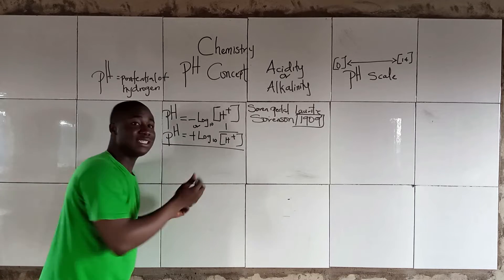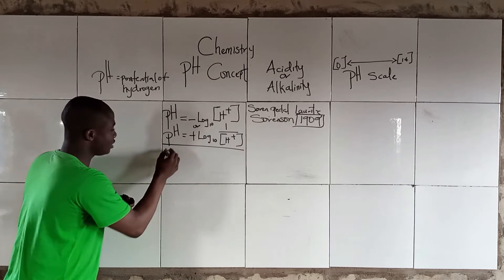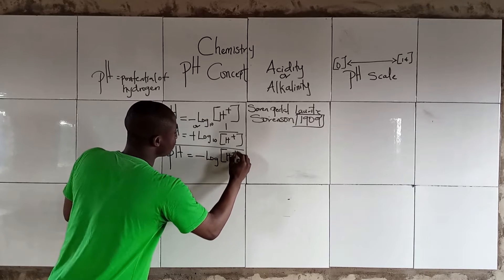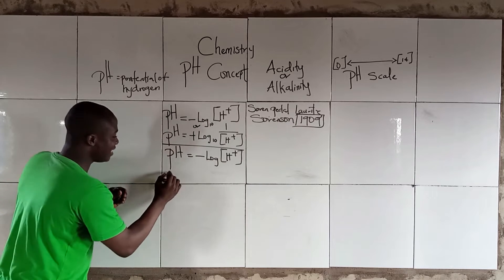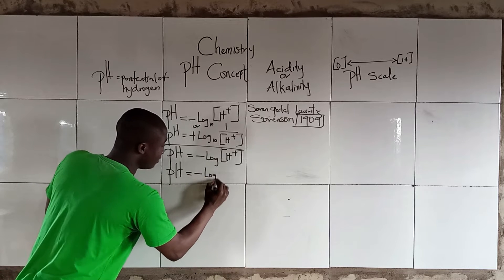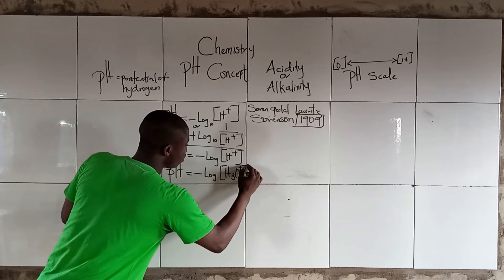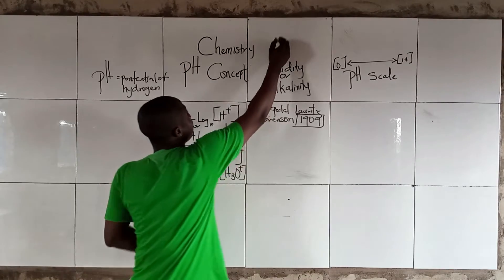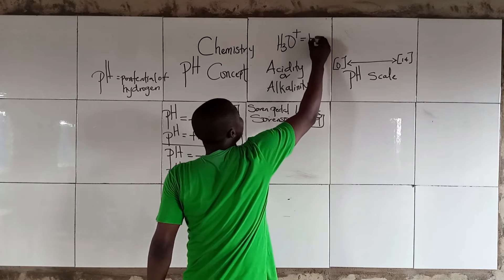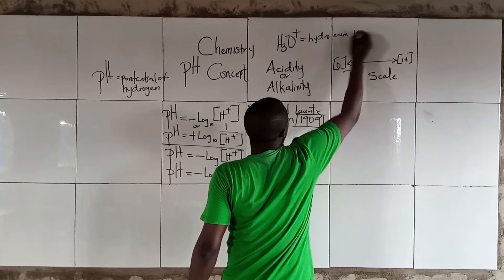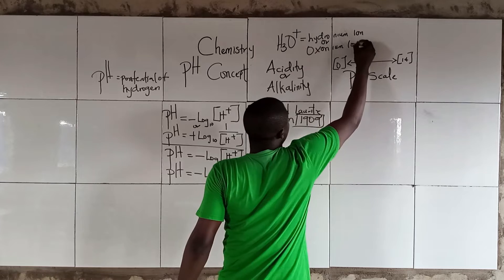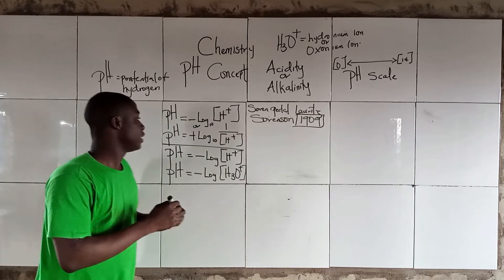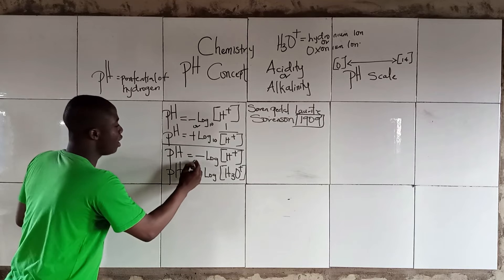Writing the base 10 sometimes is implied, so we can just say pH is simply negative log of [H₃O⁺] concentration. H₃O⁺ refers to the hydronium ion — it is not simply hydrogen ion alone. Our pH formula can also be expressed in this form.